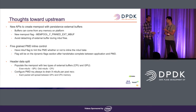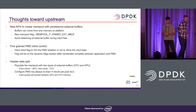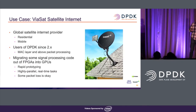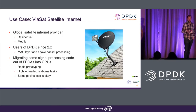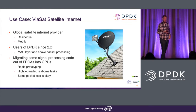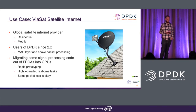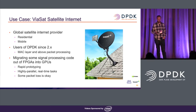Now Cliff will present an actual use case of how all of this is used in a real application. My name is Cliff Burdick, I work at Viasat. One of our products is satellite internet — we're a global satellite internet provider for residential and mobile users. We've been using DPDK since version 2.x for MAC layer packet processing and above, including traffic steering and packet reassembly.